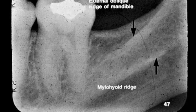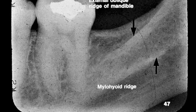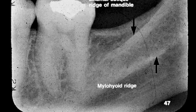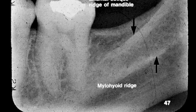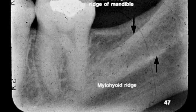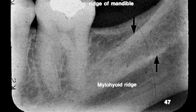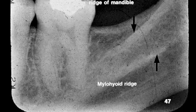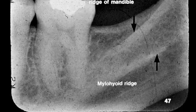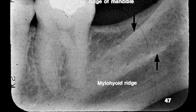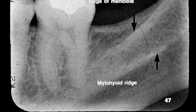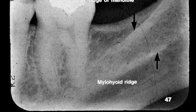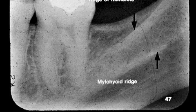Below the myelohyoid ridge is a large radiolucent area. This is the submandibular gland fossa, where the submandibular gland is located. It is a depression in the bone. The very lower edge of the mandible, or the lower border of the mandible, appears radiopaque and is also visible in this slide.